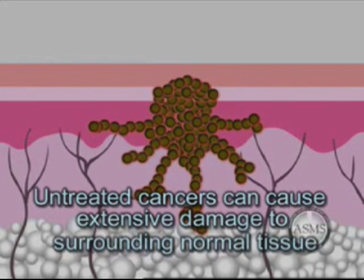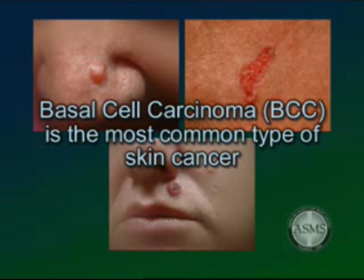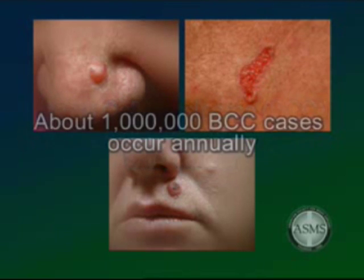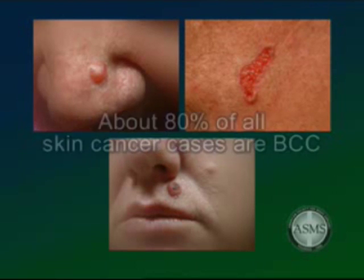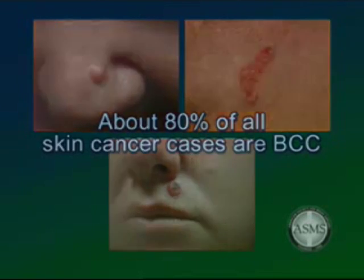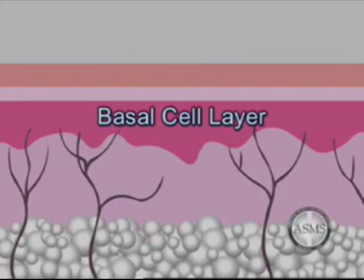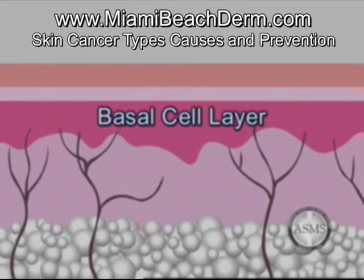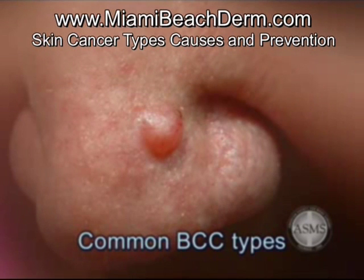Fortunately, metastasis of skin cancer is not common. Basal cell carcinoma (BCC) is the most common type of skin cancer in the United States. Approximately 1 million cases of BCC occur annually, accounting for about 80% of all skin cancer cases. It is the slowest growing and least dangerous of the three common types, and it rarely metastasizes. BCC develops from cells in the epidermis, the surface layer of the skin, known as the basal cell layer.